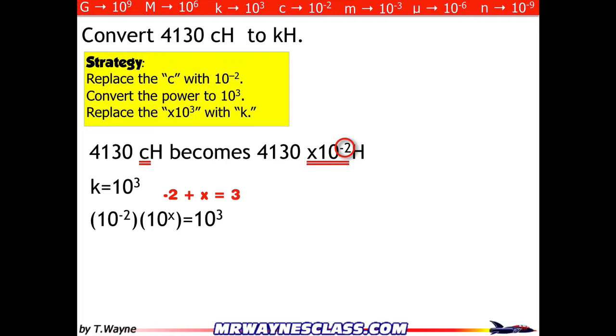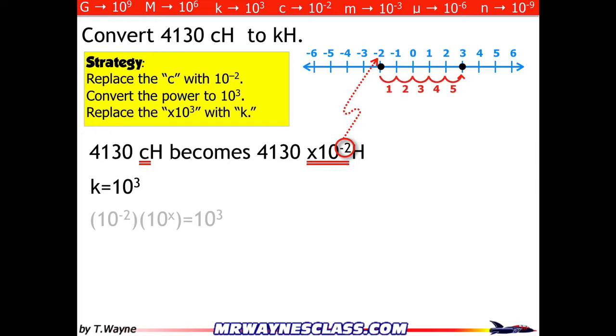But what I like to think of when I'm dealing with these exponents, I like to think of a number line. So I'm going to start with the fact that I'm on number negative 2. That's where I'm going to start. And I want to go to kilohenrys, and that's 10 to the third. So to get to 10 to the third from a 10 to the negative 2, I've got to move to the right by 5 powers of 10.